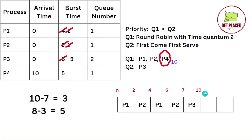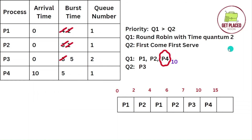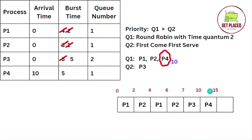At time 10, P4 arrives and belongs to Q1. Since Q1 is greater than Q2, we preempt P3 and execute P4 first. P4 has a burst time of 5 units. Using time quantum 2: P4 runs 10 to 12, then 12 to 14, then 14 to 15, completing its 5 units. Then we return to P3, which has 5 units remaining, running from 15 to 20. This completes the Gantt chart for this multilevel queue scheduling example using round robin and FCFS.